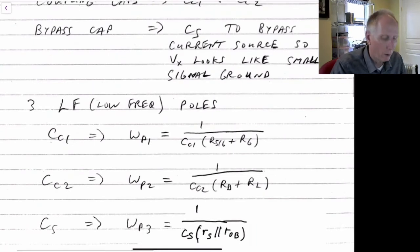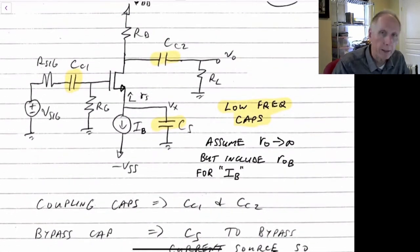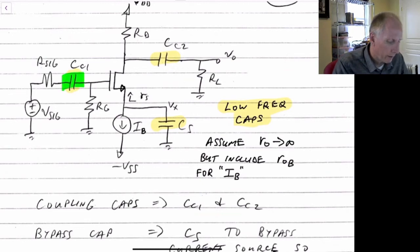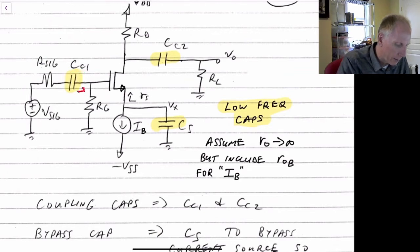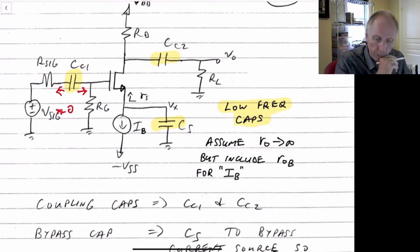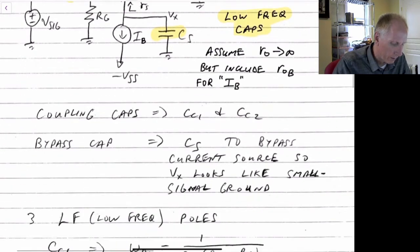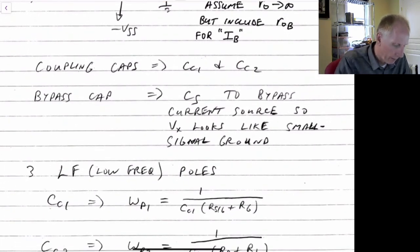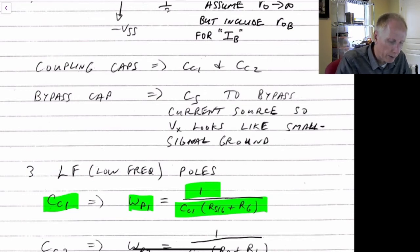In this circuit we have three low frequency poles due to the three capacitors. To find those poles, we take each capacitor and find the impedance it would see across it. For C sub C1, looking in both directions with the capacitor removed and V sub signal set to zero, we see R sub sig in series with Rg. So the pole due to C sub C1 is omega P1 = 1 / (C sub C1 × (R signal + Rg)).